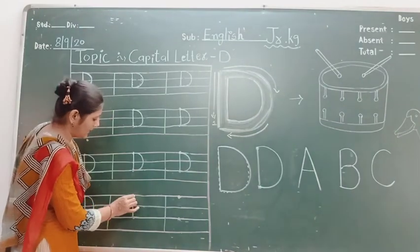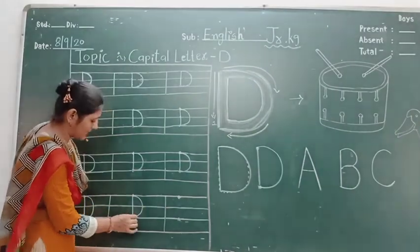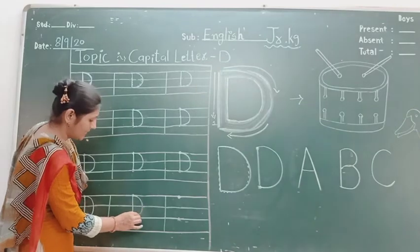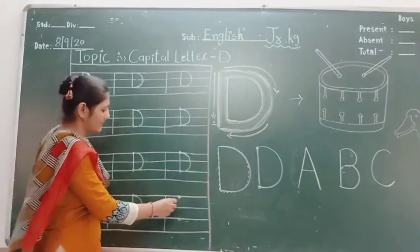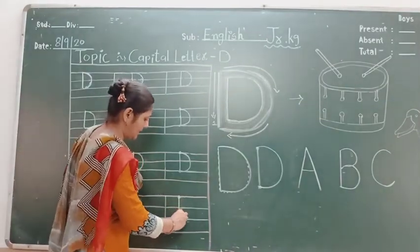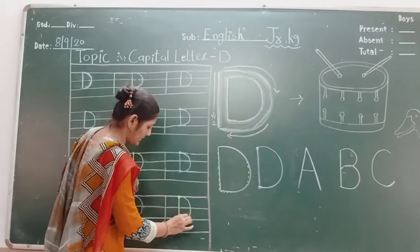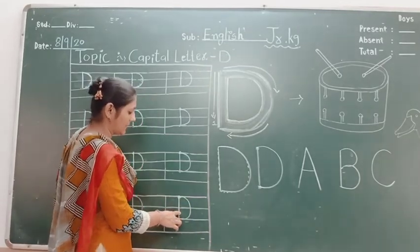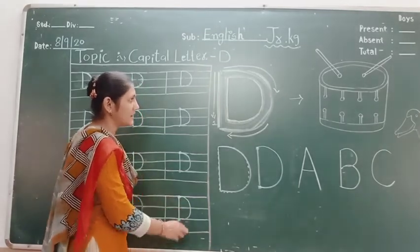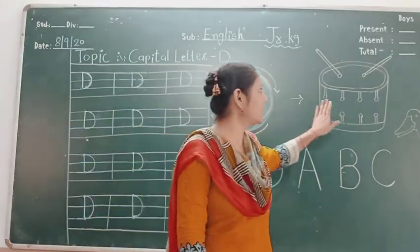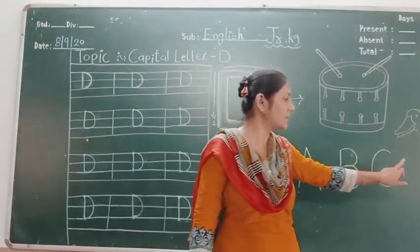Standing line, curve line — make a capital letter D. D for dog. Standing line, curve line — make a capital letter D. D for drum.